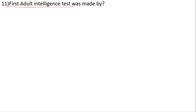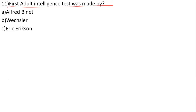The first adult intelligence test was made by whom? Options: Alfred Binet, Wechsler, Eric Erickson, None of these. Alfred Binet made the first intelligence test, while the first adult intelligence test was made by Wechsler.